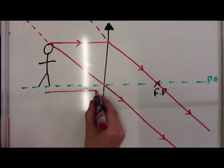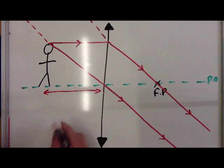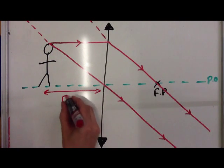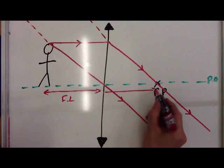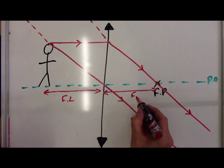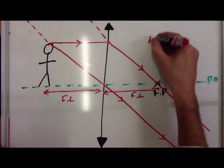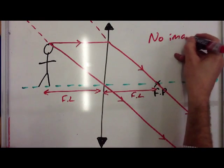So if this distance here, if that distance there, which we call the focal length, is equal to that distance there, then we get no image.